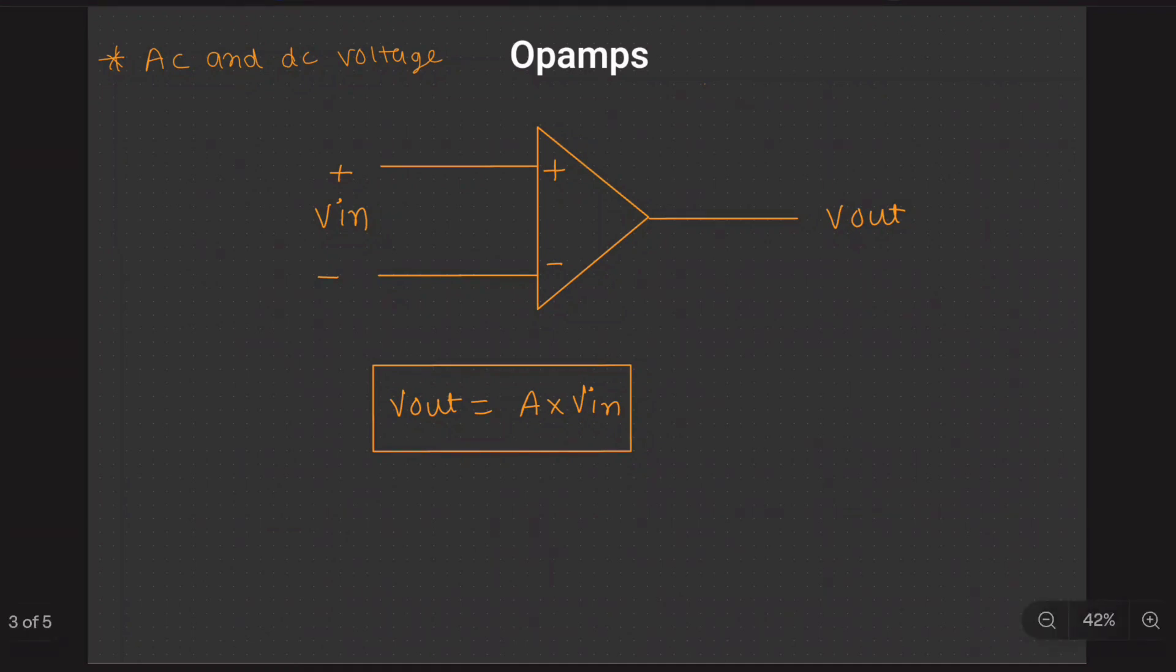We have two inputs. First is positive input and the negative input. The difference of this input, the difference of voltage, is being amplified and given to the Vout.